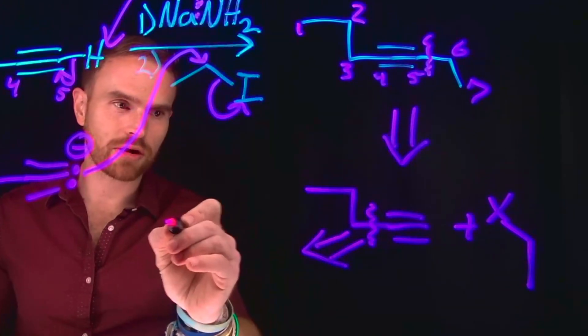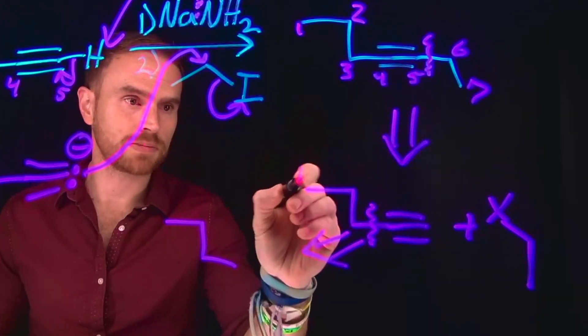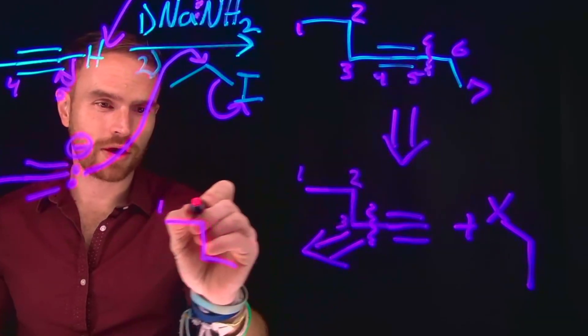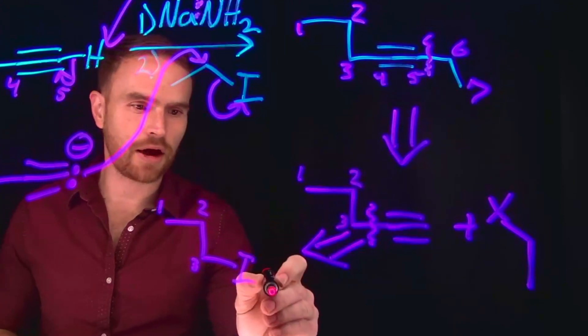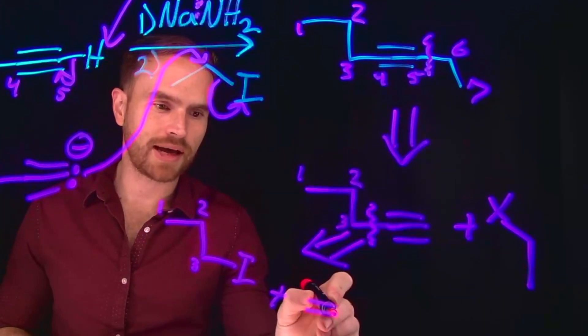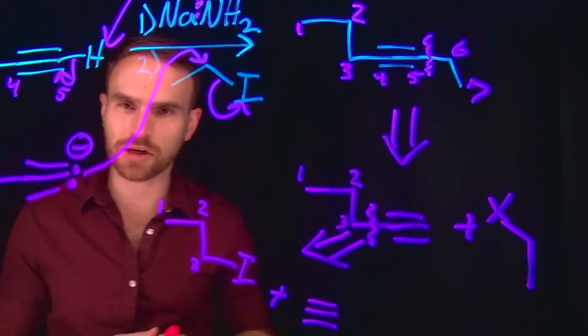that might mean that our starting material contained 3 carbons, because we had 1, 2, 3, and this one has 1, 2, 3 as well, with another halide on it, and the other reactant might have been acetylene, which is just this carbon-carbon triple bond.